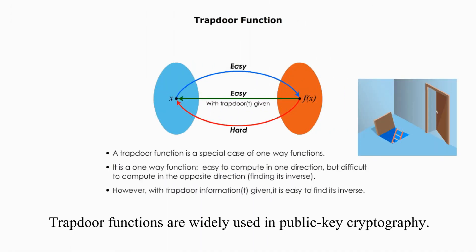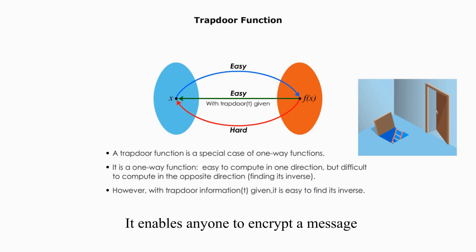Trapdoor functions are widely used in public key cryptography. It enables anyone to encrypt a message, which may only be decrypted by the one who has the private key. RSA crypto system uses the trapdoor function and digital signatures use trapdoor functions. As we study more about the public key algorithms, you will see more uses of trapdoor functions.